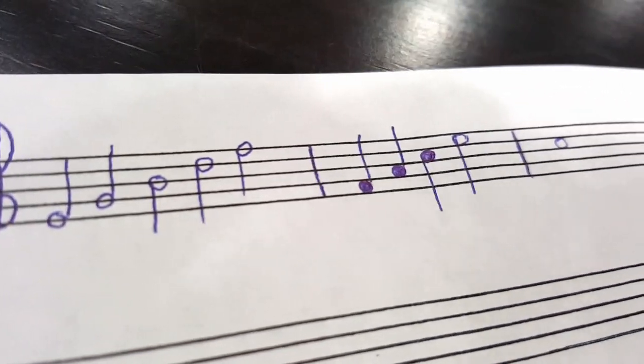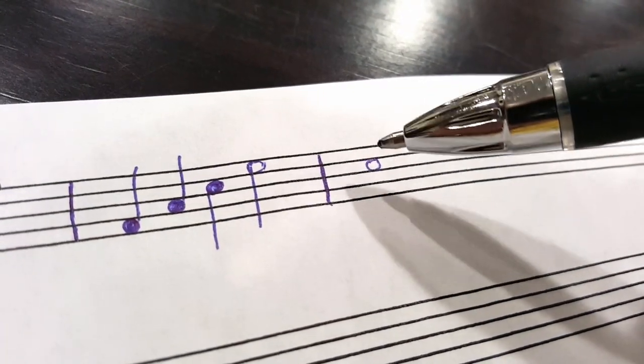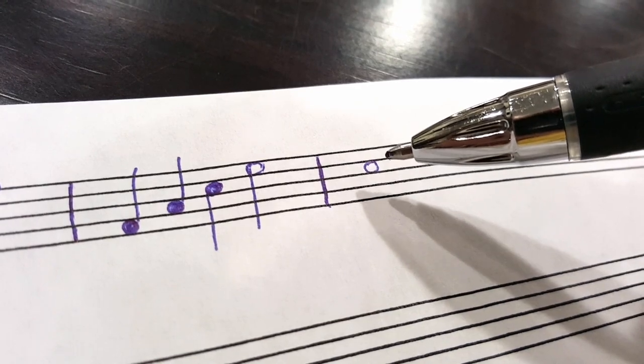A whole note is basically a circle, and you can put it either on a line or a space.